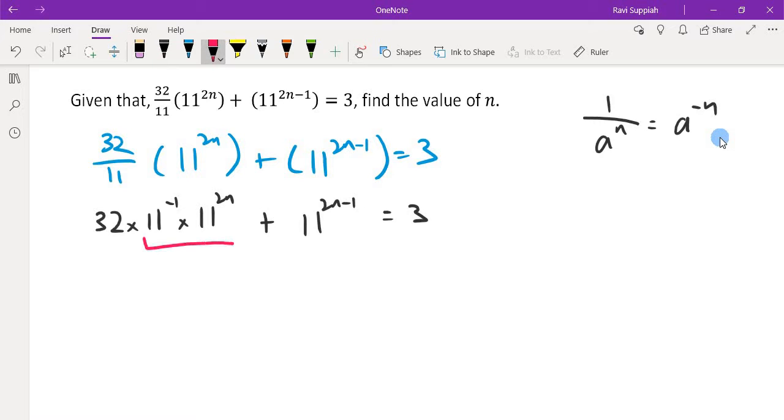Looking at these two terms, this brings us to another indices rule: a^m multiplied by a^n equals a^(m+n). Both terms have the same base of 11. Applying this rule, I get 32 times 11^(2n-1) plus 11^(2n-1) equals 3.